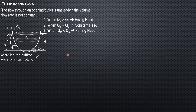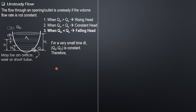For a very small time dt, the difference between Q_in and Q_out is effectively constant — in a blink of an eye there is no change in the rates, so this difference times the differential time equals the volumetric change. Therefore, the differential volume equals (Q_in minus Q_out) times dt, and this differential volume is also represented as area S times dH.